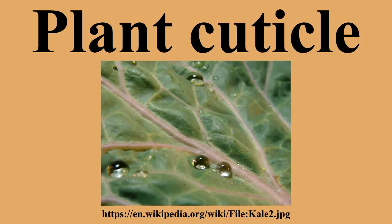The plant cuticle is a layer of lipid polymer impregnated with waxes that is present on the outer surfaces of the primary organs of all vascular land plants. It is also present in the sporophyte generation of hornworts, and in both sporophyte and gametophyte generations of mosses. The plant cuticle forms a coherent continuous covering of the plant that can be isolated intact by treatment of plant tissue with enzymes such as pectinase and cellulase.